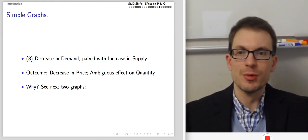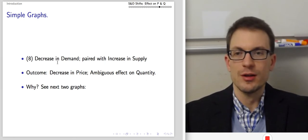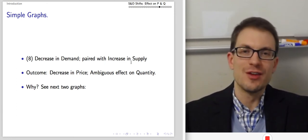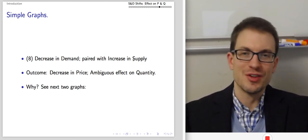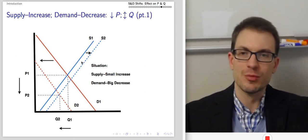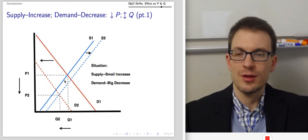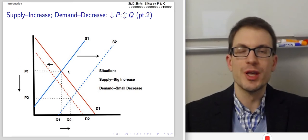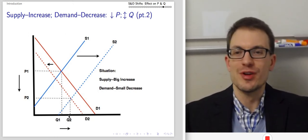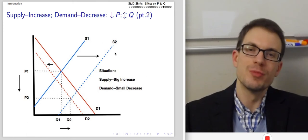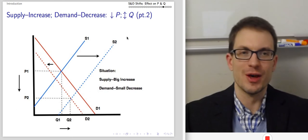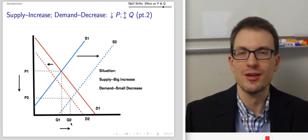What if we have a decrease in demand and an increase in supply? That gives us a decrease in price and an ambiguous effect on quantity. The decrease in demand tends toward a decrease in quantity; the increase in supply tends toward more units being traded. Both a loss of interest and flooding the market with units are a recipe for a decrease in price. Drawing two pictures: a big leftward shift to demand with a small rightward shift to supply tends toward lower price and lower quantity. But a big rightward shift to supply with a small decrease in demand still gives a lower price — now with an increase in quantity. The two hypotheticals agree on a price decrease but disagree on quantity.